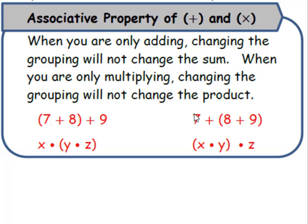The associative property of addition and multiplication states, when you are only adding, changing the grouping will not change the sum. When you are only multiplying, changing the grouping will not change the product.